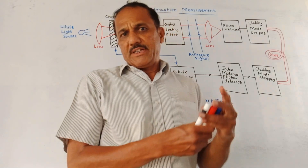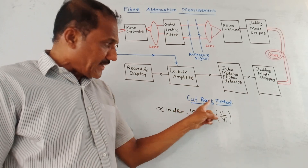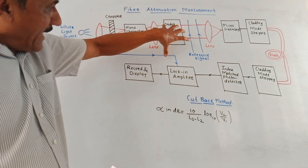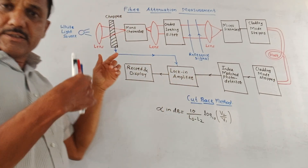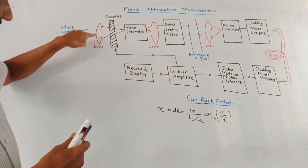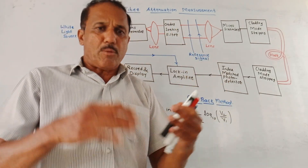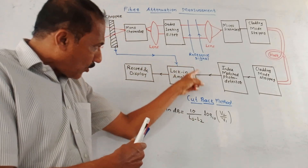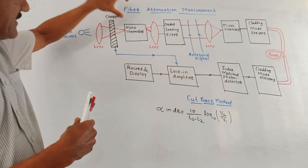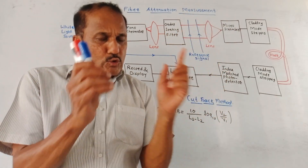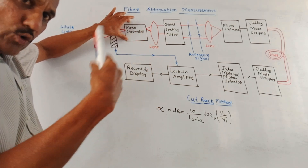Next is fiber attenuation measurements. To measure attenuation — the reduction taking place when signals pass through fiber optic cable — different techniques are available, but the most commonly used is the cut-back method. At the input side, a white light source is used, such as a tungsten lamp or xenon lamp. A lens focuses the light, then a chopper performs chopping of incoming light — making it on and off — and this signal is also applied to the lock-in amplifier at the receiver side to avoid power fluctuations. A monochromator is used to select a particular wavelength for measurement.